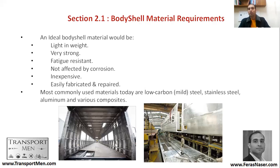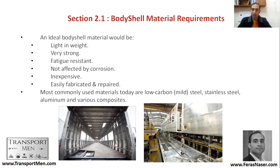An ideal body shell material would be light in weight, so it does not damage the infrastructure, has good aerodynamics, and is easy to propel. It should also be very strong with fatigue resistance — that is, cyclic loading for a long time — not affected by corrosion and weather conditions, not expensive, and easily fabricated and repaired. These are the ideal requirements we expect to achieve within our vehicle body shell.